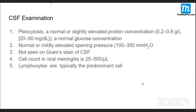CSF pressure in viral meningitis is normal or mildly elevated — it is raised but less compared to bacterial meningitis. Normal CSF pressure is 180 mm of water. Viral meningitis is also a type of aseptic meningitis — if you stain with Gram stain, you will not find organisms. That's what aseptic meningitis means, and that's how we approach the patient.